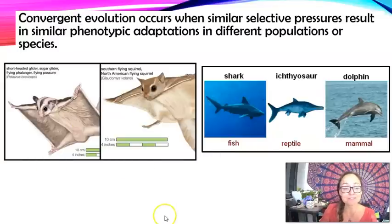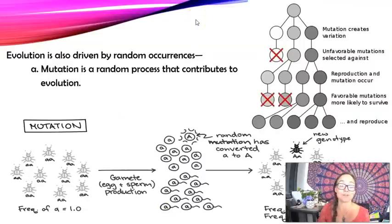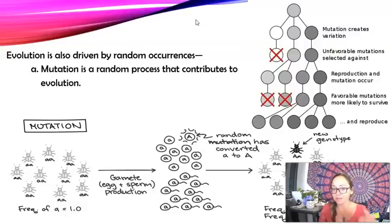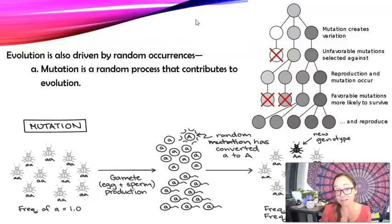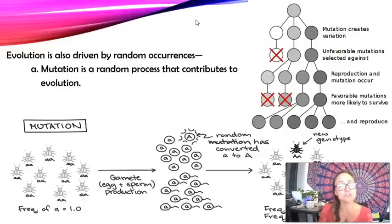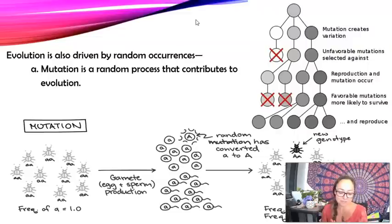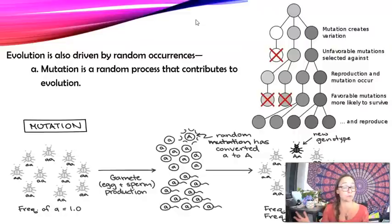Evolution is also driven by random occurrences. Mutations are one such occurrence — they constantly happen. As humans we tend to think mutations have a negative effect, but most are neutral because they occur in non-coding areas of DNA or in introns and aren't expressed in proteins. A mutation in a critically important enzyme could cause a deficiency, but mutations are also the ultimate source of variation — the mutation that created blue eyes in humans is from about 6,000 years ago and was neutral.